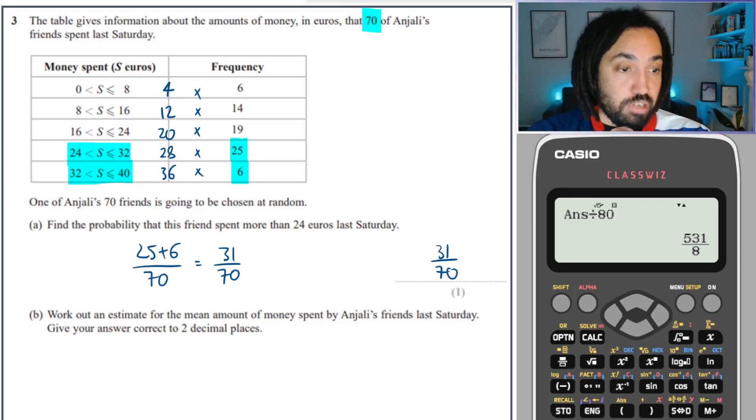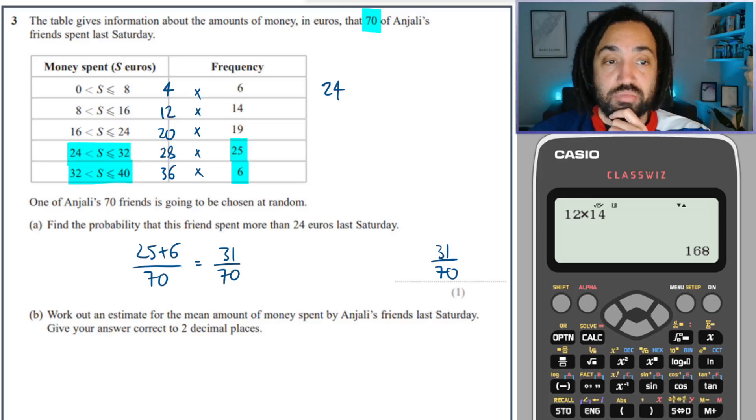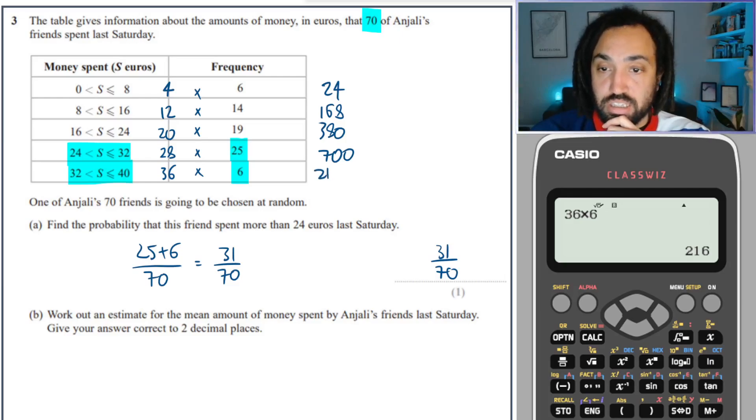I've already typed them into my calculator. I've not got some sort of hack which gives me the answers instantly. But that was 24, this one's 168, this one is 380, then 700, and finally that should be 216. Yes, lovely.